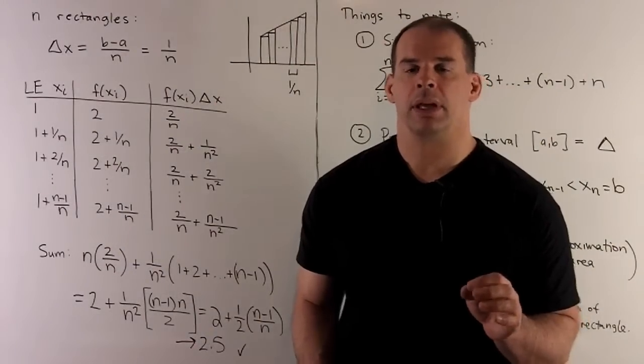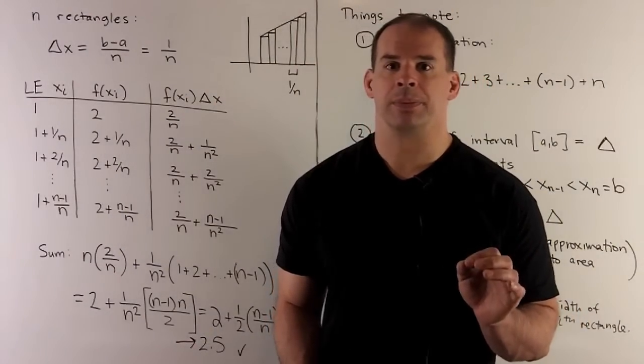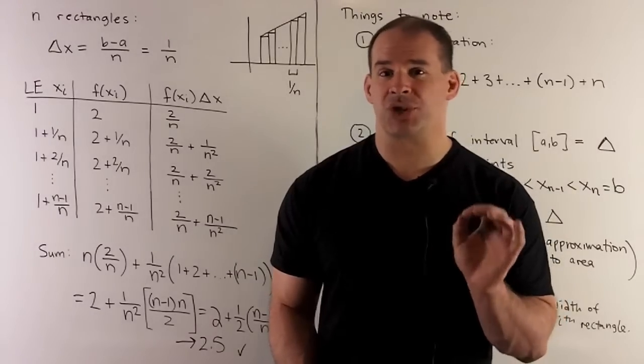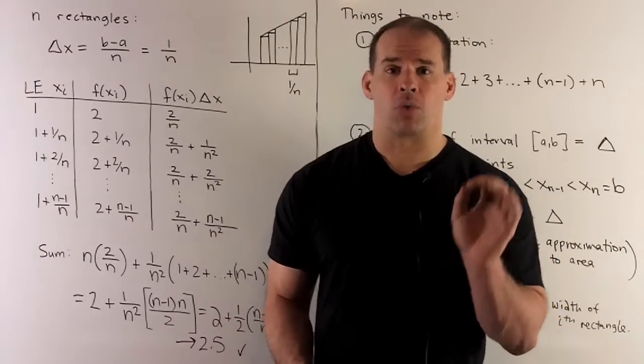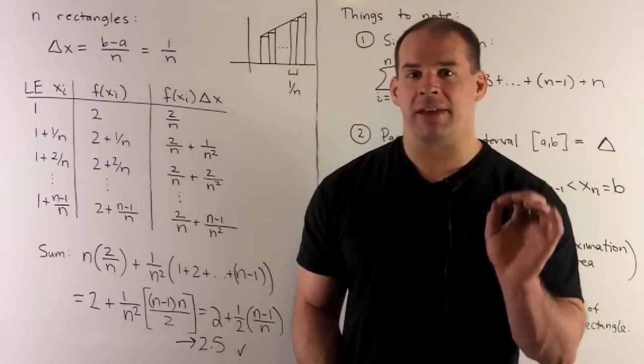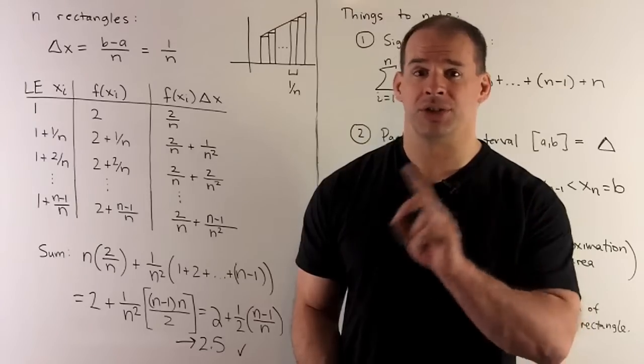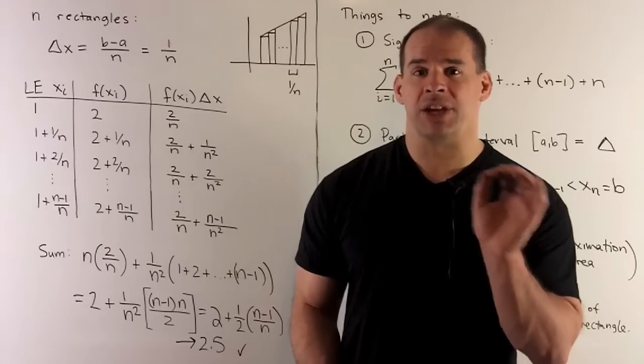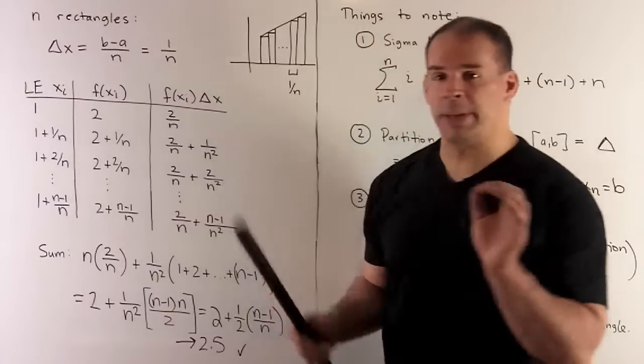Now, how about if we use n rectangles with equal length base? This might seem unmanageable, but it's really just an exercise in bookkeeping. First, our rectangles have equal length base. So, if I want to fit n of those into an interval of length 1, we're going from 1 to 2, that means each has to have base 1 over n. So, that's going to be my delta x.